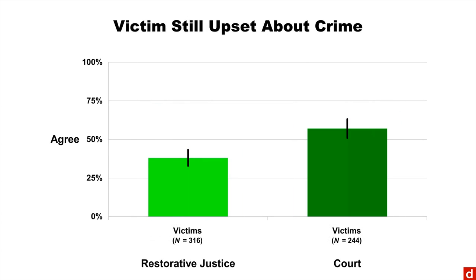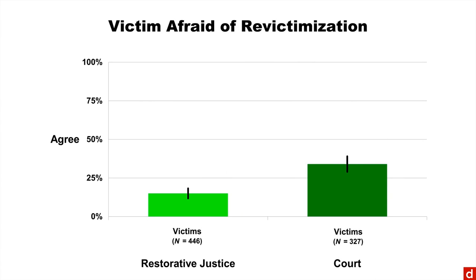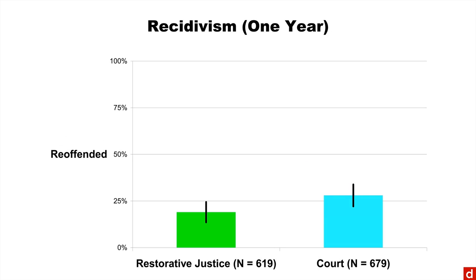Whether the victim is still upset about the crime—now the bars are a little different—and whether they're afraid of re-victimization. That's over a two to one difference. And then finally, recidivism for offenders or reoffending, and you see a big difference there.